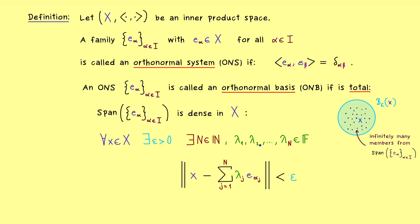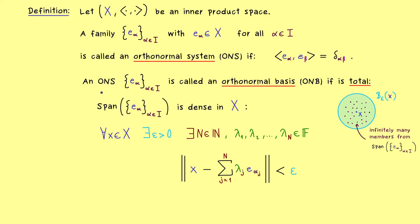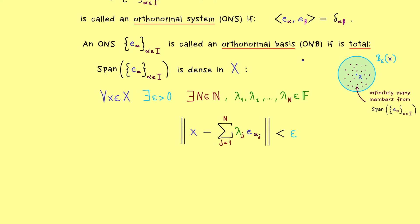You should remember this definition: a total ONS is an ONB, which means linear combinations can be chosen as close as we want to any point in the vector space. You immediately see this is different from an ordinary basis of a vector space, because there we would always find a linear combination such that we have equality. However, as we will see, this definition for an ONB gives us a big advantage when we deal with Hilbert spaces.